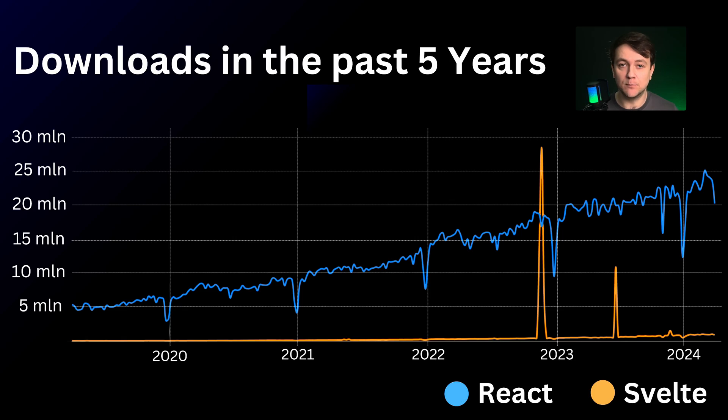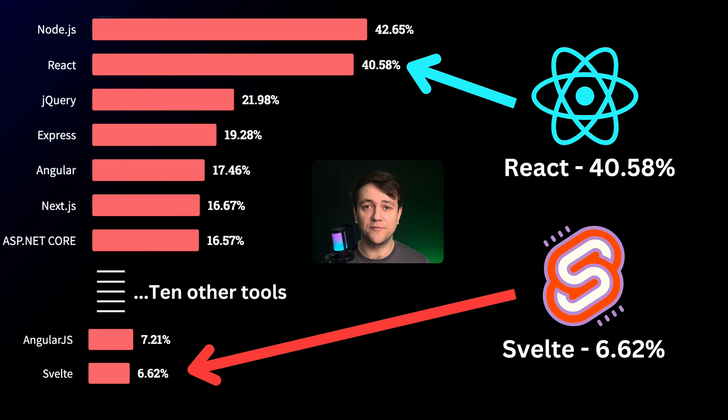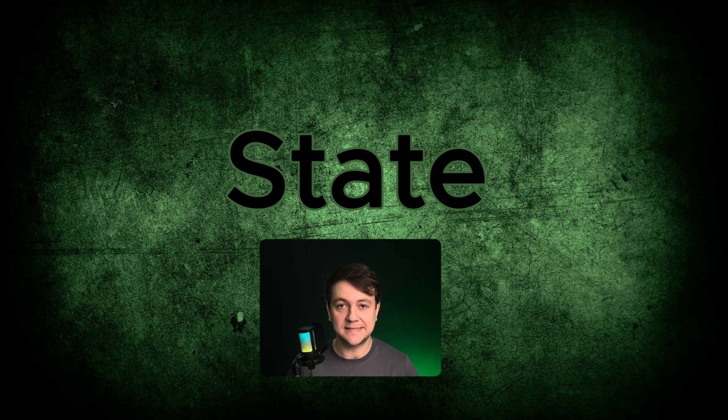React is downloaded on average 20 times more than Svelte; however, Svelte shows promising growth. Regarding job opportunities, React developers are in high demand, and more competition leads to higher salaries for experienced developers. According to Stack Overflow research, React is first among JavaScript libraries, while Svelte is fifth behind jQuery, Angular, and Vue. Now let's look into syntax differences between Svelte and React.